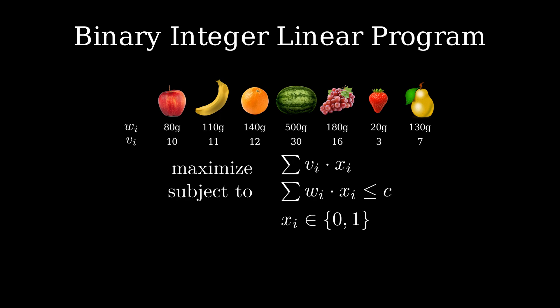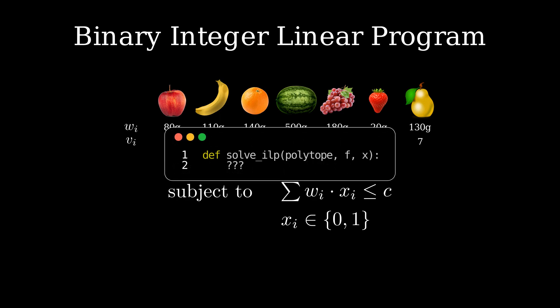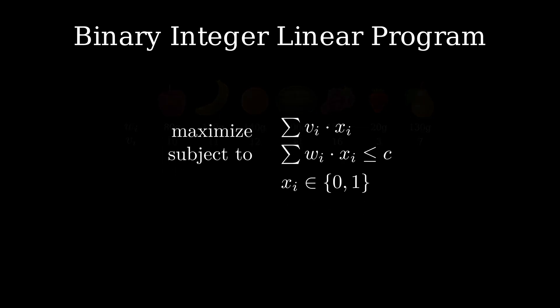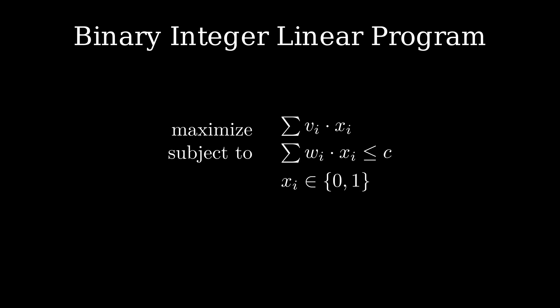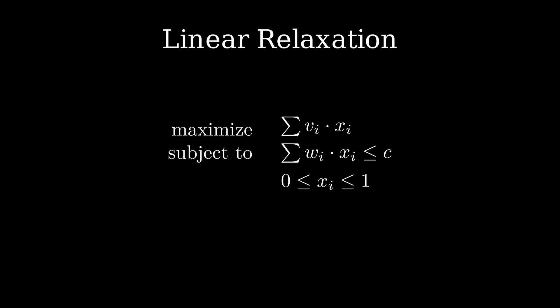Unfortunately, unlike LPs no efficient algorithm for solving ILPs is known. One possible strategy is relaxing our integer constraints for the variables. Instead of forcing them to be either zero or one, we relax the variable to be in the interval between zero and one. Then we can use the simplex algorithm to solve the LP and afterwards round the variables to either zero or one according to the nearest feasible point. We call this the linear relaxation.